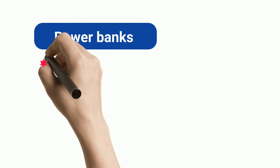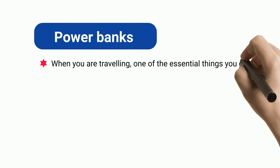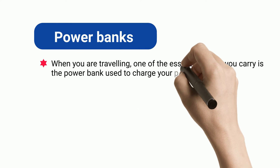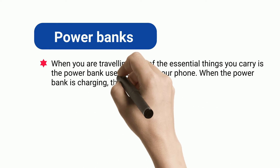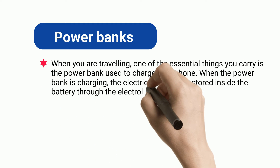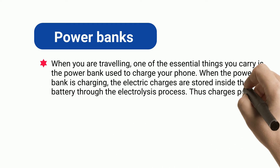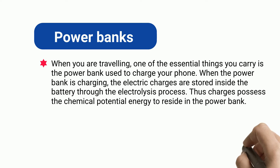Power Banks. When you are traveling, one of the essential things you carry is the power bank used to charge your phone. When the power bank is charging, the electric charges are stored inside the battery through the electrolysis process, and thus the charges possess chemical potential energy residing in the power bank.